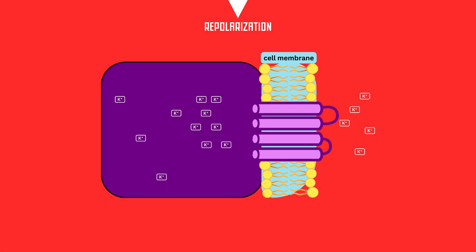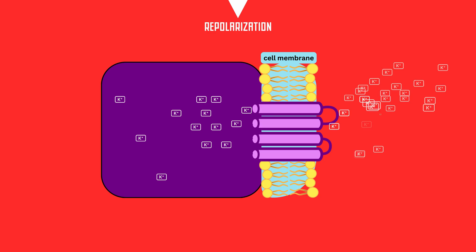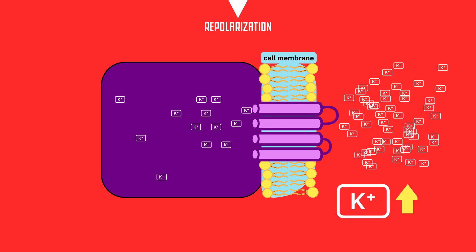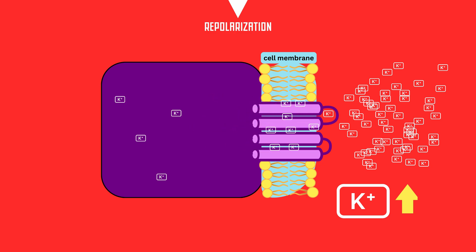You might be wondering: where does this potassium inside the cell come from? Well, it mainly comes from the extracellular space, which is essentially the blood. Now, what happens when there's a higher concentration of potassium in the blood? More potassium moves out — from lower concentration to higher concentration through osmosis and diffusion.